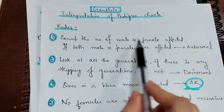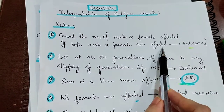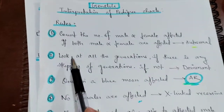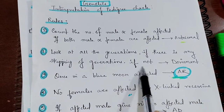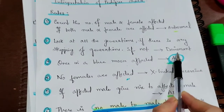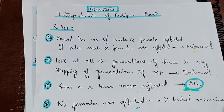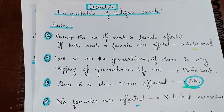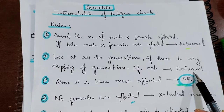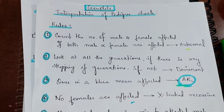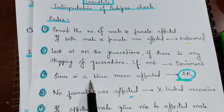First, count the number of males and females affected. If both males and females are affected, then it is autosomal. Second, look at all the generations — if there is no skipping of generations, it is dominant. If all generations are affected, or more than two or three generations are affected, it is most likely dominant. If only one generation is affected — no parents, no grandparents, only a child — it is likely recessive.